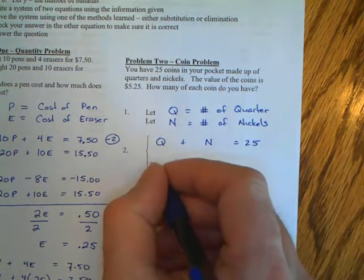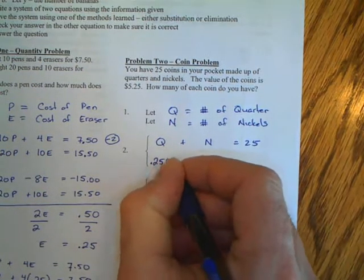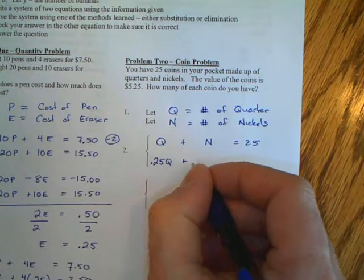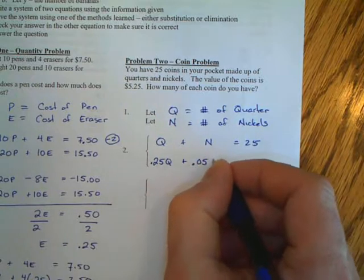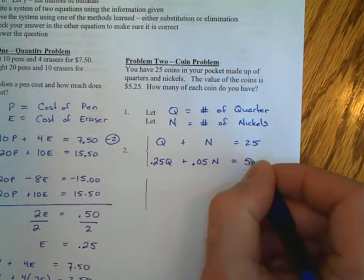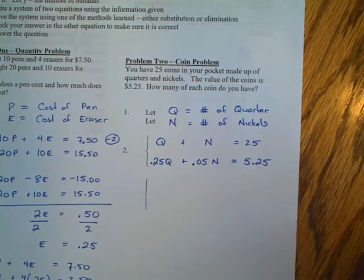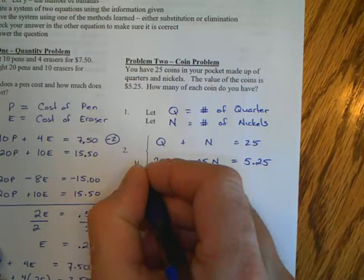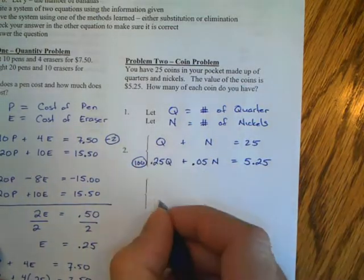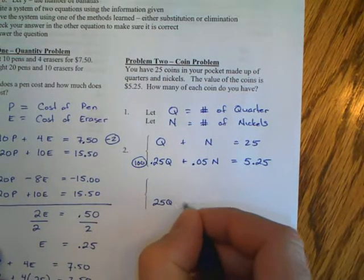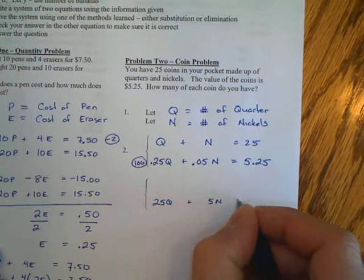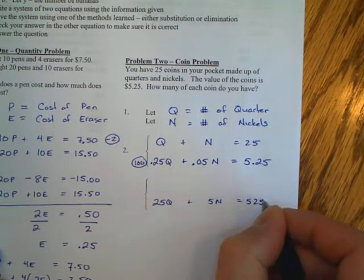So my first equation has to do with the quantity: Q + N = 25 because we have 25 coins. My second equation has to do with value. The value of my quarters is 25 cents each. So 0.25Q + 0.05N equals the value of all my money in my pocket, which is $5.25.